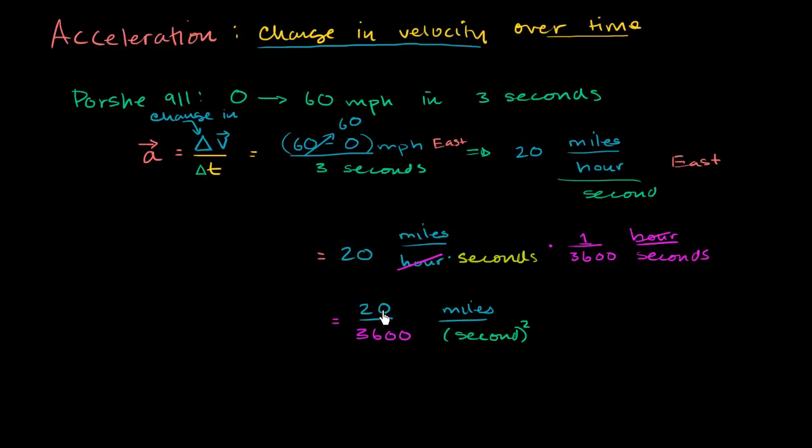And we can simplify this a little bit. Divide the numerator and the denominator by 10. You get 2 over 360. Or you could get this is the same thing as 1 over 180 miles per second squared.